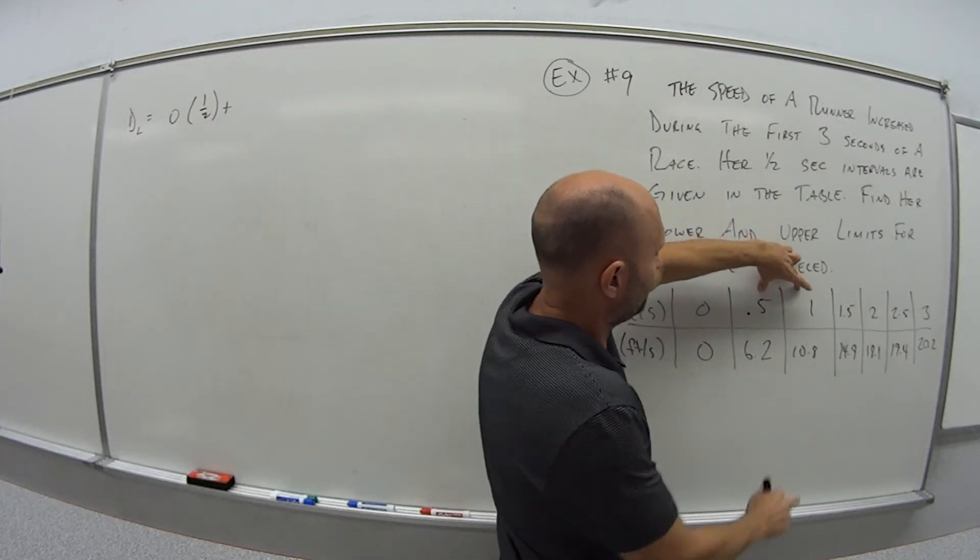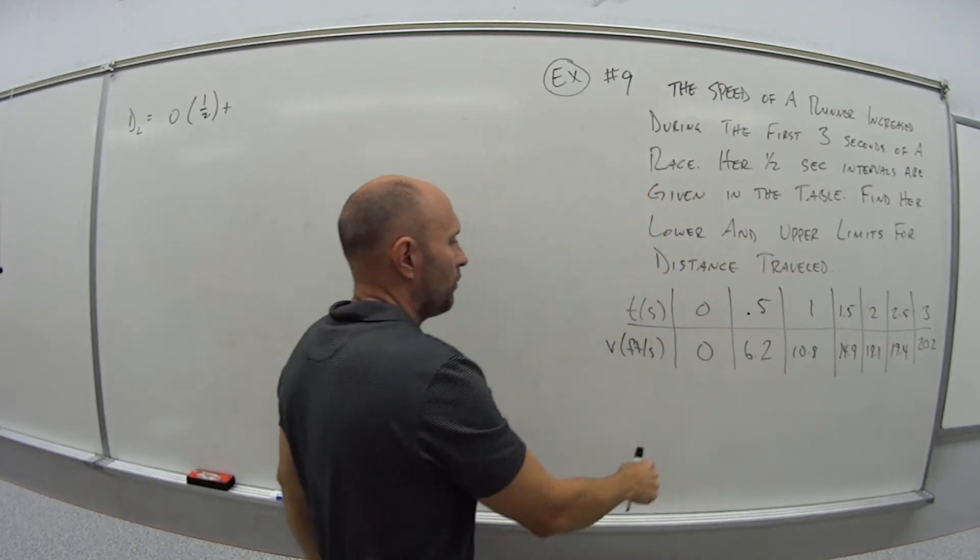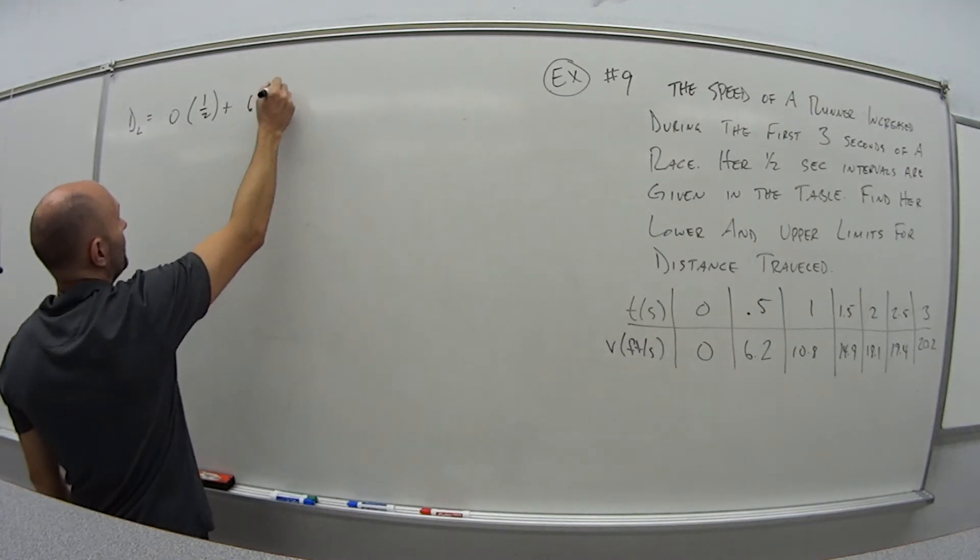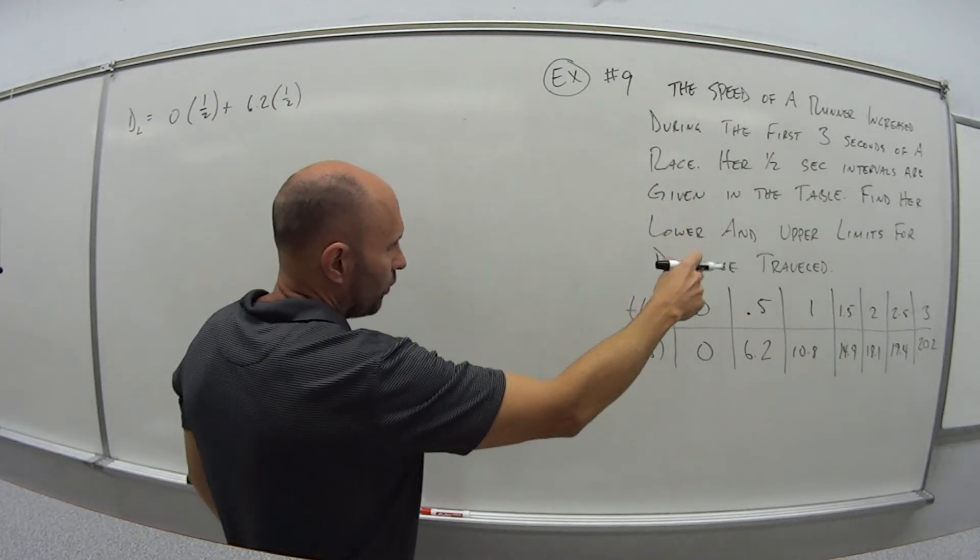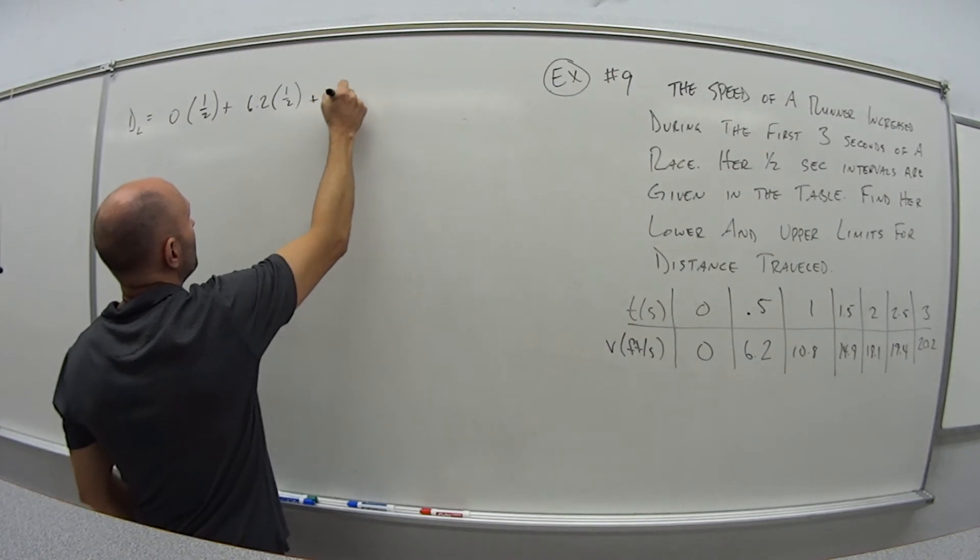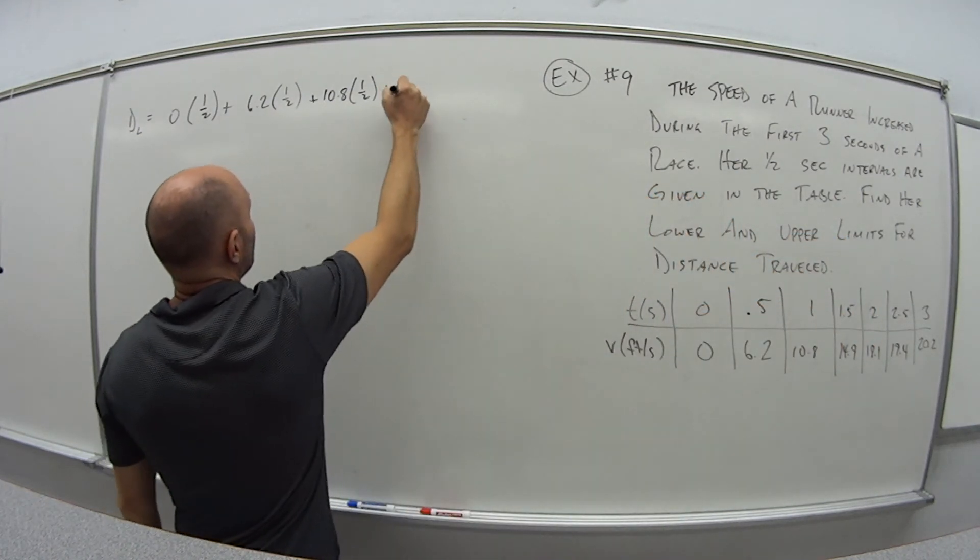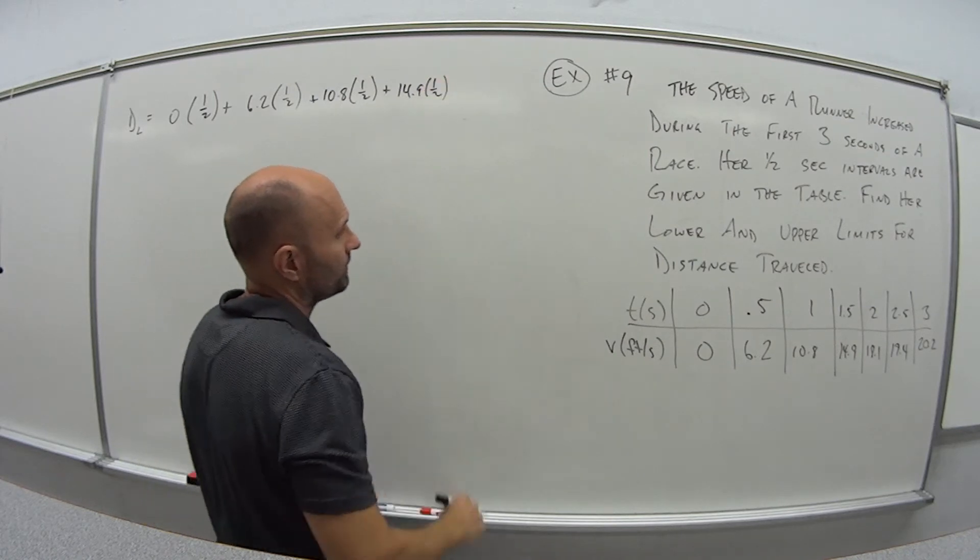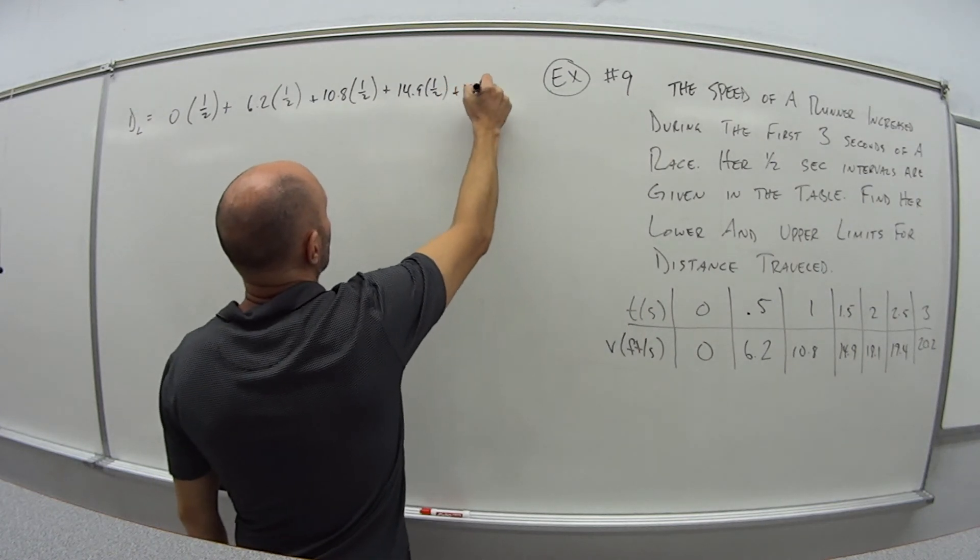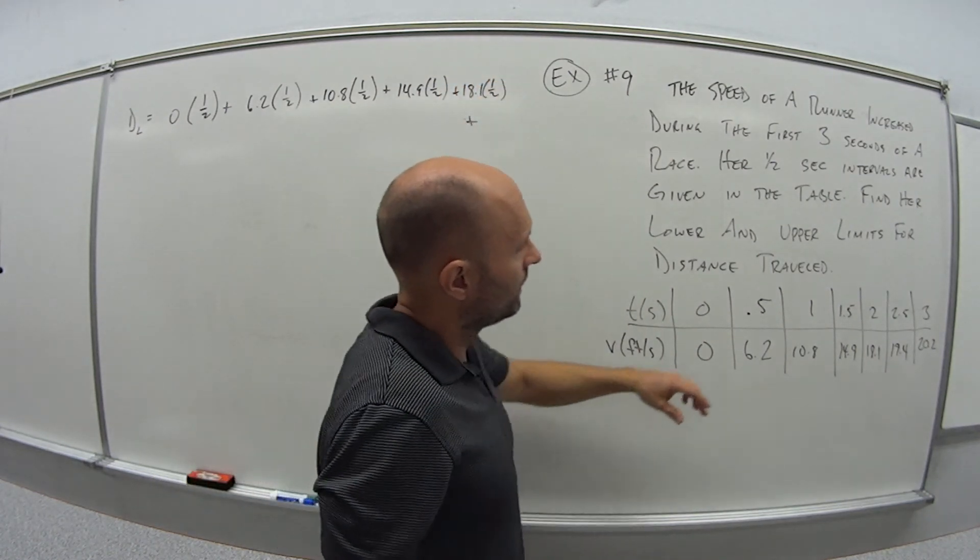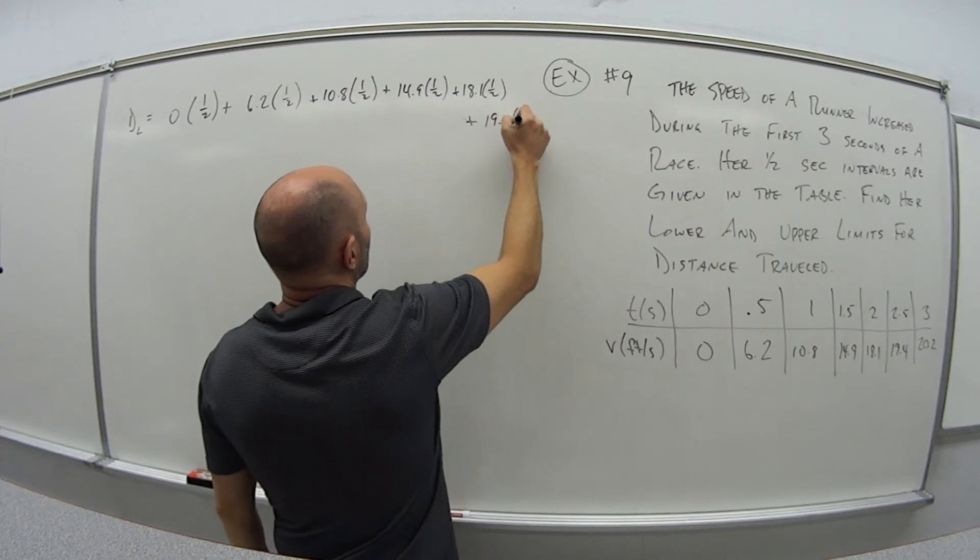For the next interval, half to 1, the function value is 6.2, because we're using the left end point, the function at the left end point. So 6.2 times a half, so these are all going to be times a half, half second intervals. And then what? From 1 to 1.5, 10.8 times a half. From 1.5 to 2, we get 14.9 times a half. From 2 to 2.5, we use 18.1 times a half. And then from 2.5 to 3, we use what? 19.4 times a half.